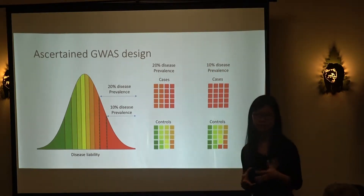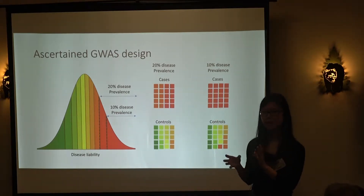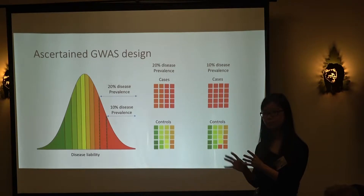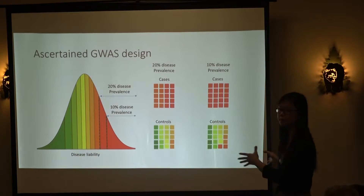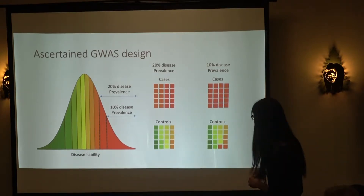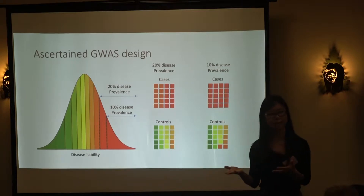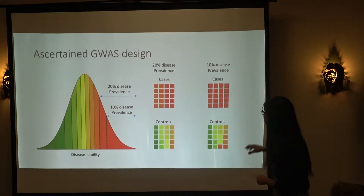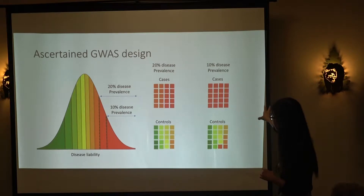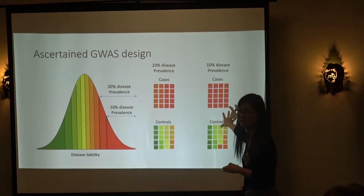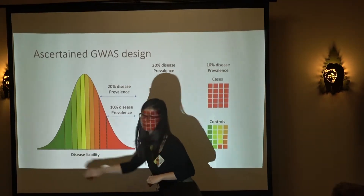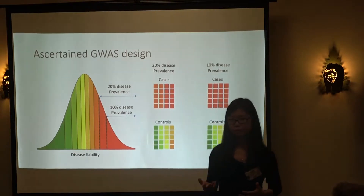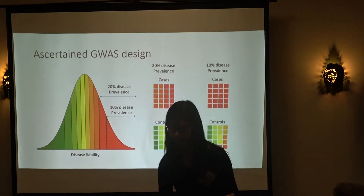Similarly, if you want only the most severe form of the disease and decrease prevalence to about 10%, then ideally all the cases you collect have the highest liability and all your controls fall below the threshold. That is what you hope for when collecting data based on criteria that also defined the disease prevalence.